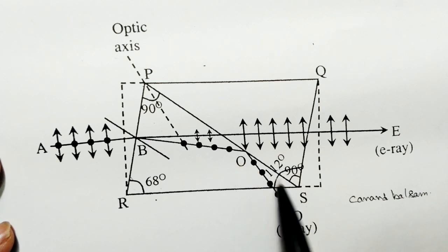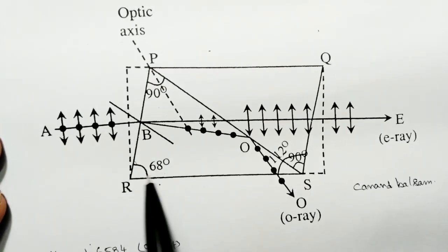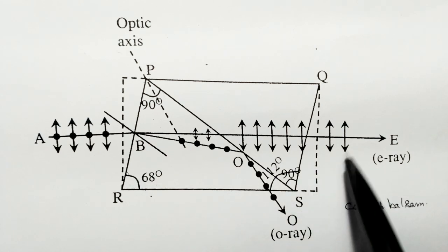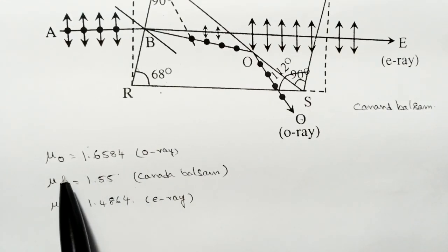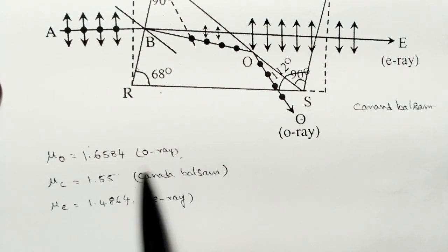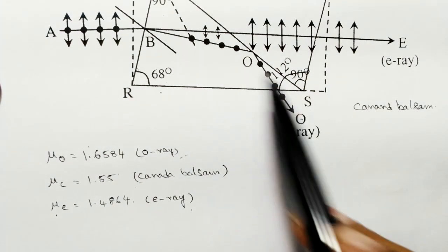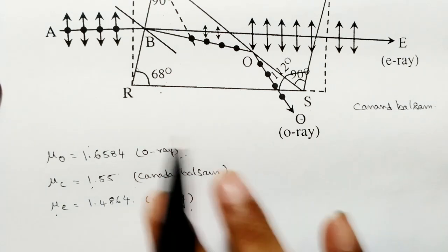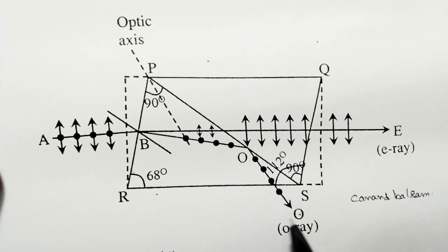Canada balsam is a transparent gum used to paste optical materials. Its refractive index is 1.55. Due to double refraction, two rays are produced: the ordinary ray with refractive index mu-o = 1.6584, and the extraordinary ray with mu-e = 1.4864. Canada balsam, with refractive index 1.55, is intermediate between these two values.